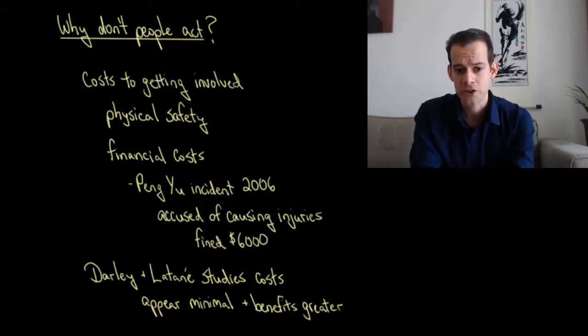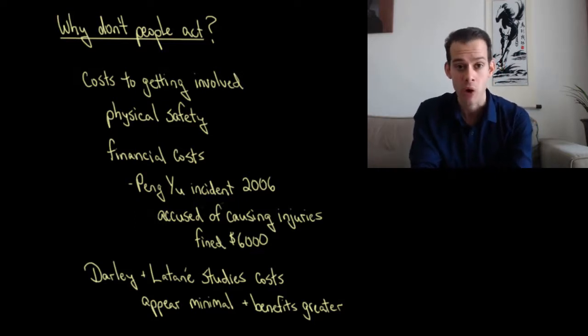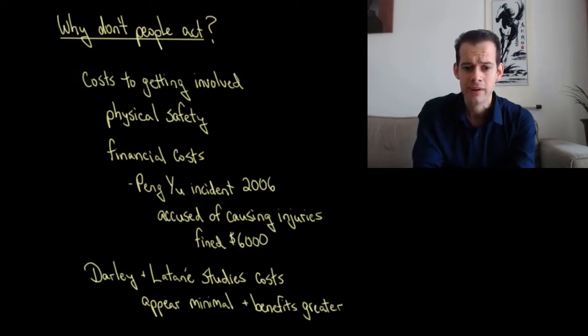But if we think about John Darley and Bibb Latane's studies, we might realize that the costs appear fairly minimal, just leaving the room and looking for someone else to get involved. So the costs don't seem to be particularly great, and the benefits seem even greater, particularly in the smoke-filled room study, because your own physical safety might be at risk if there's a fire in the building. And so you would think that the cost of walking out of the room and finding somebody to ask, or the cost of maybe the potential embarrassment of being wrong that actually it's nothing to worry about, that seems minimal compared to the risk to your own physical safety. So what else could be involved in explaining why people don't act?